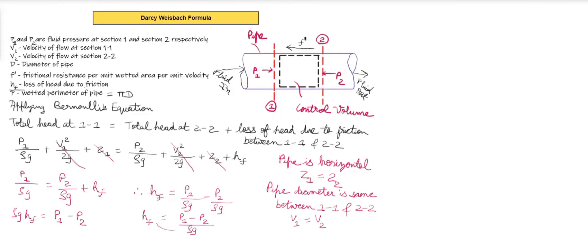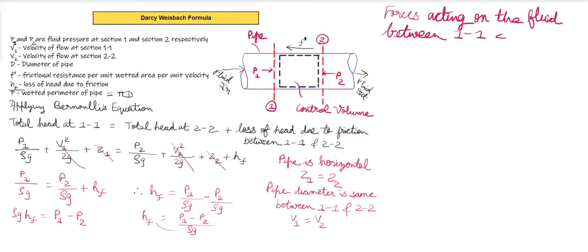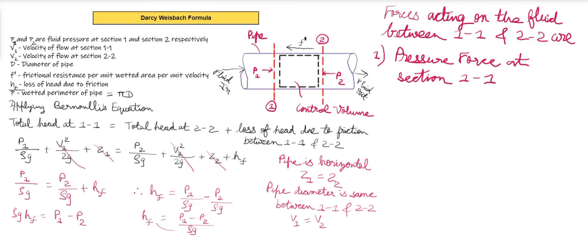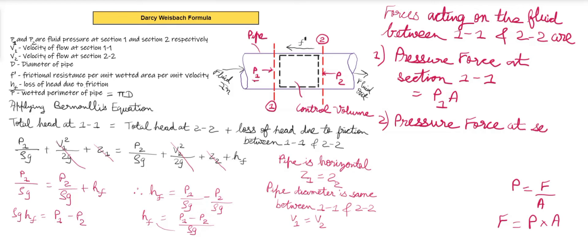Now let us consider what forces are acting on the fluid between section 1-1 and section 2-2. The first force is the pressure force at section 1-1, which equals P1 times A. At section 2-2, the pressure force equals P2 times A. The third force is the frictional force, which we denote as F1.